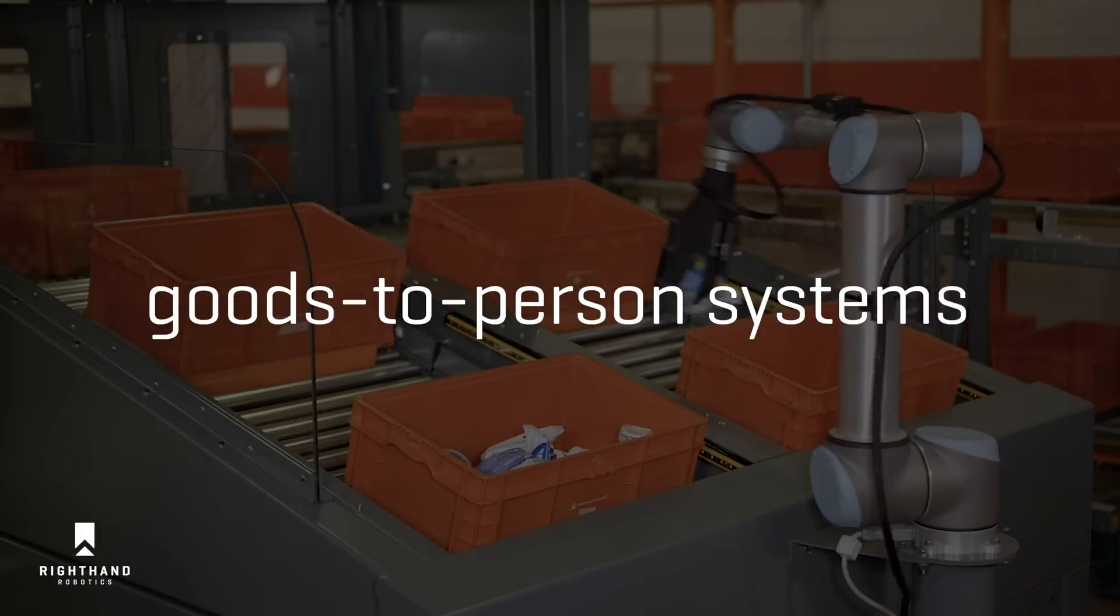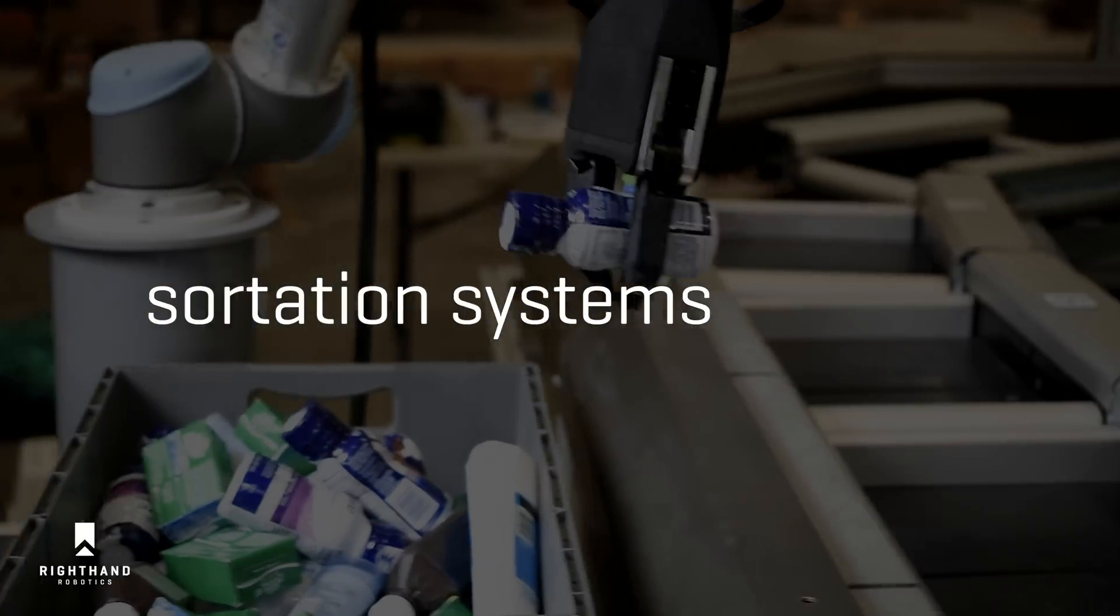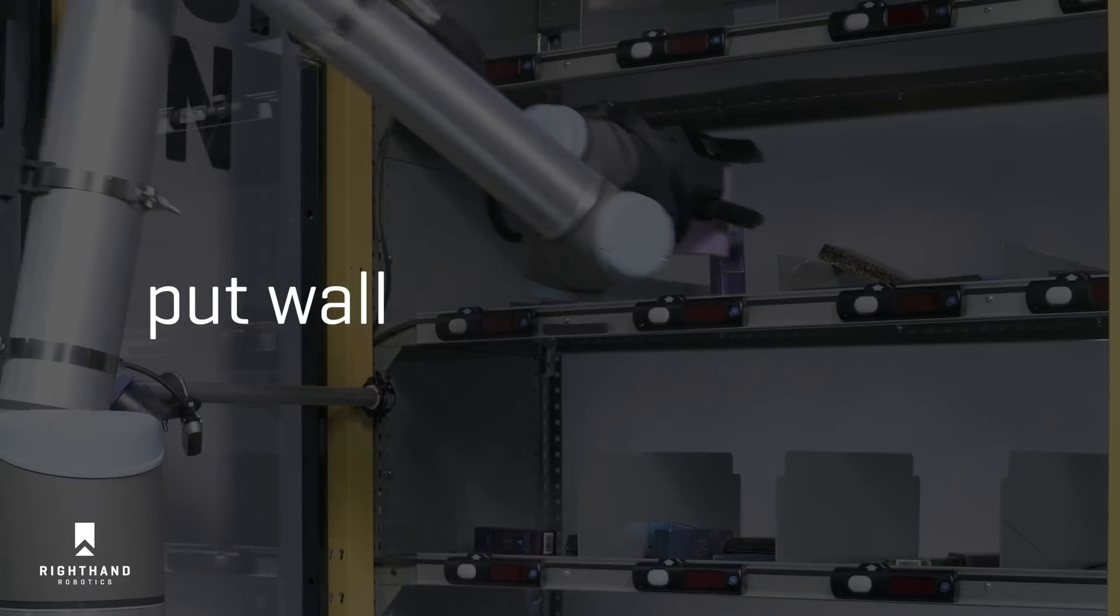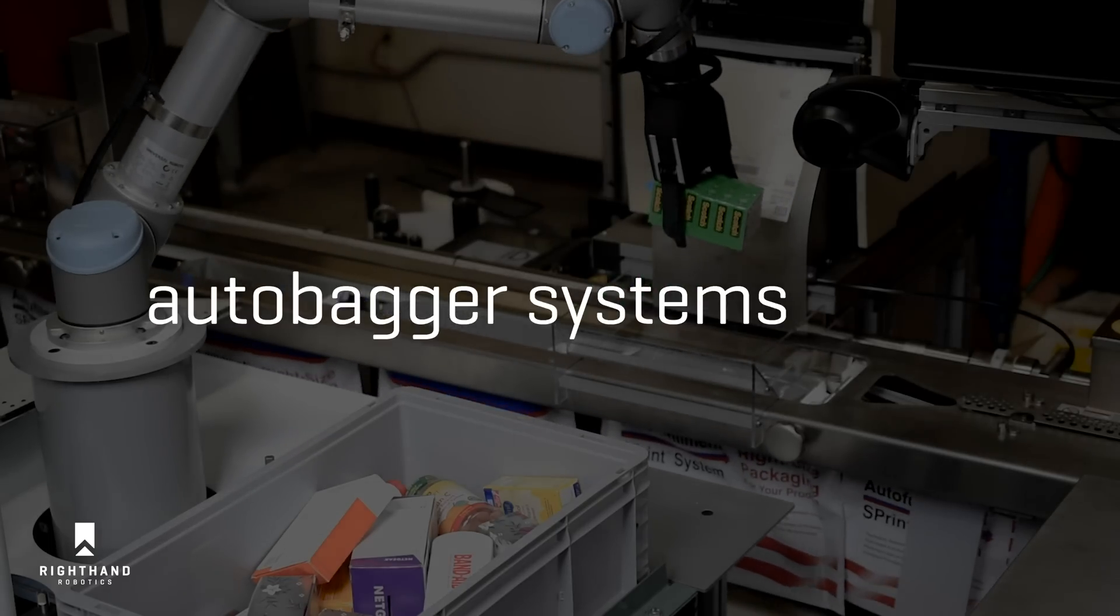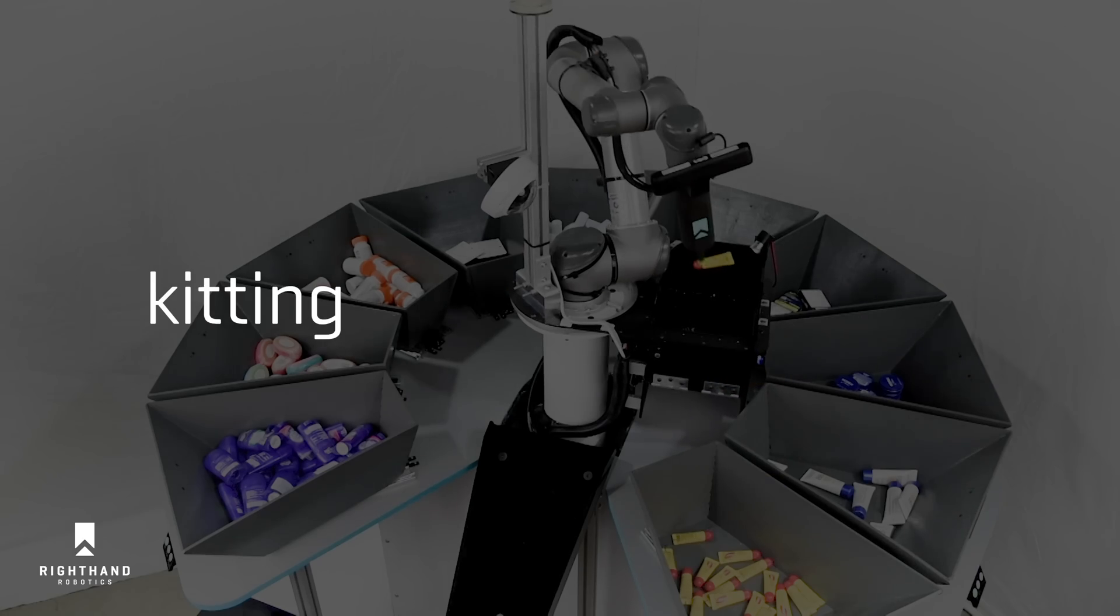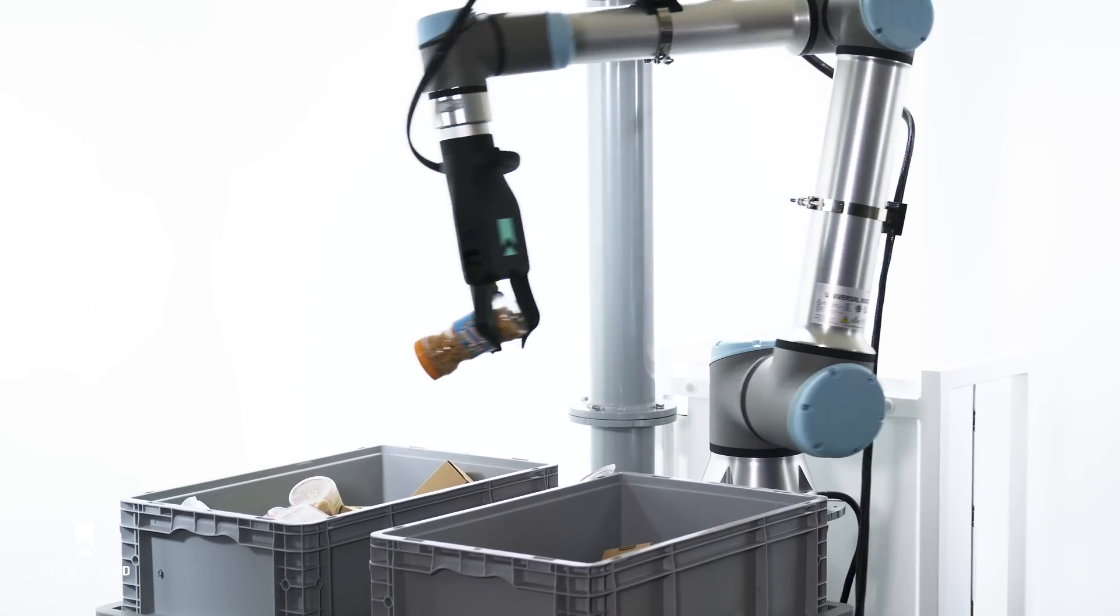With RightPick, you can pick from a range of goods-to-person systems, induct to sortation systems, sort to a put wall, pick single item orders directly to auto-bagger systems, place to mobile robots, and automate kitting processes.